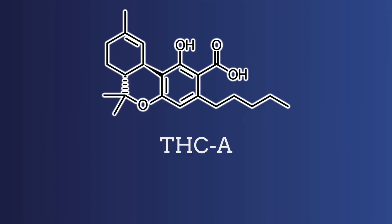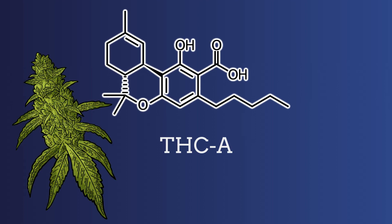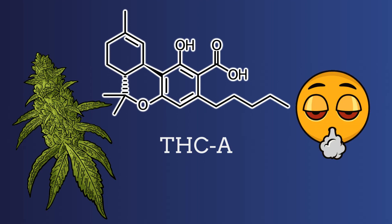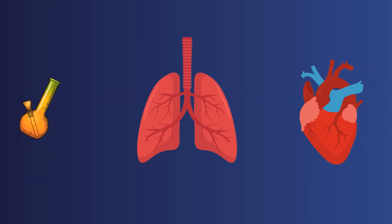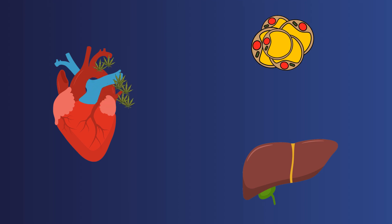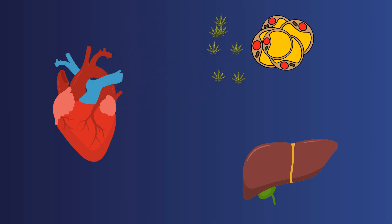Tetrahydrocannabinolic acid, or THCA, is a cannabinoid found in raw cannabis. It's not psychoactive and doesn't cause a high effect. THCA becomes THC when we smoke. Then THC goes into the lungs and next to the blood. About 70% of the THC is taken up by tissues, primarily by body fat, and 30% is metabolized.